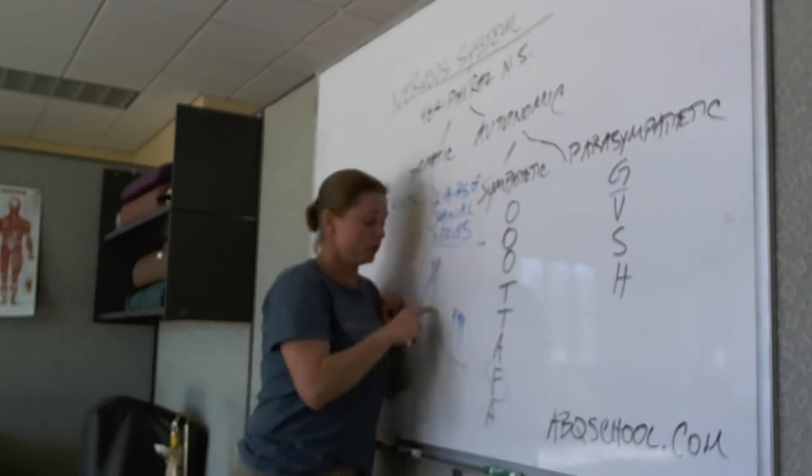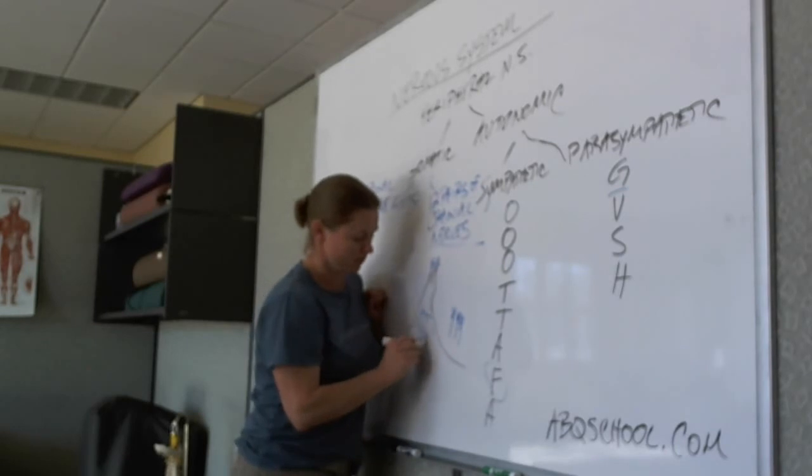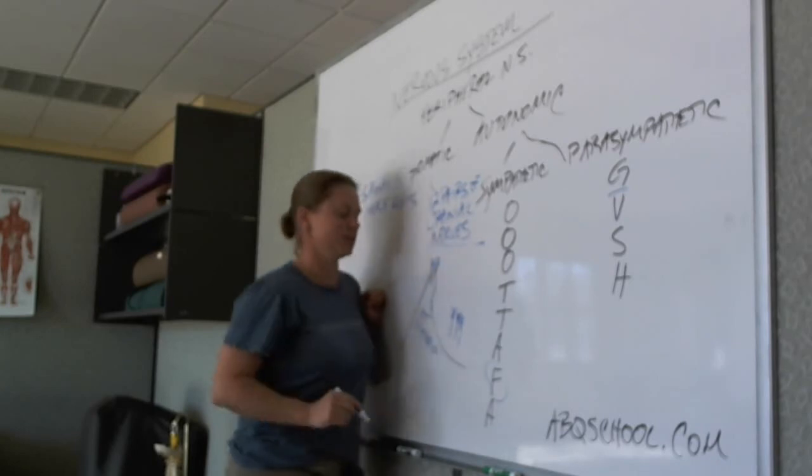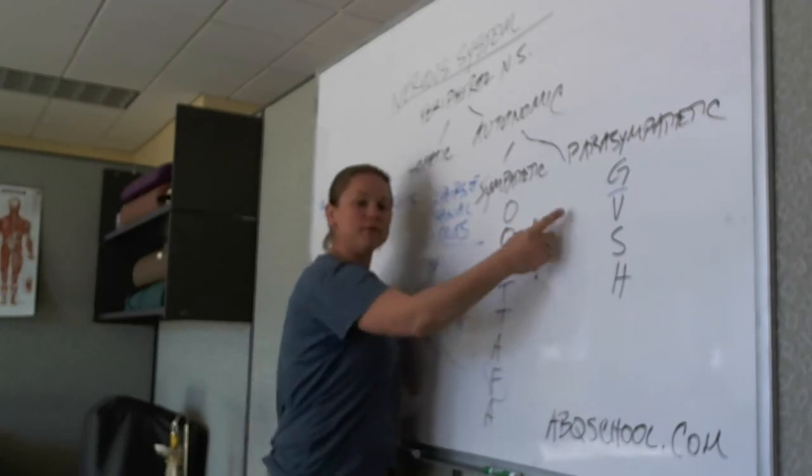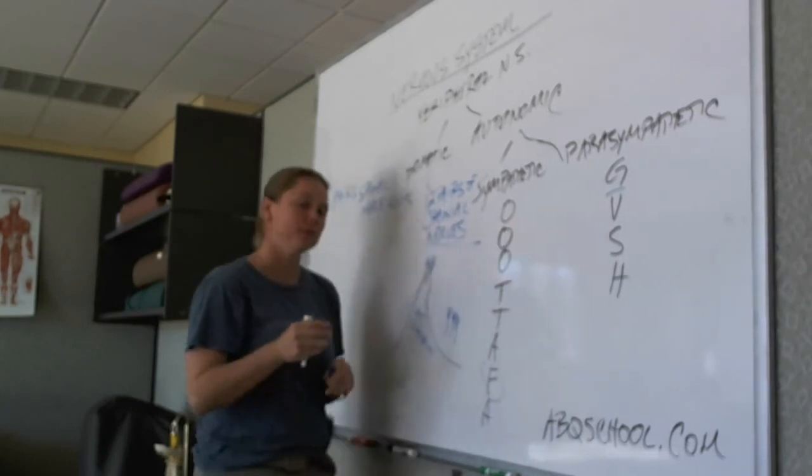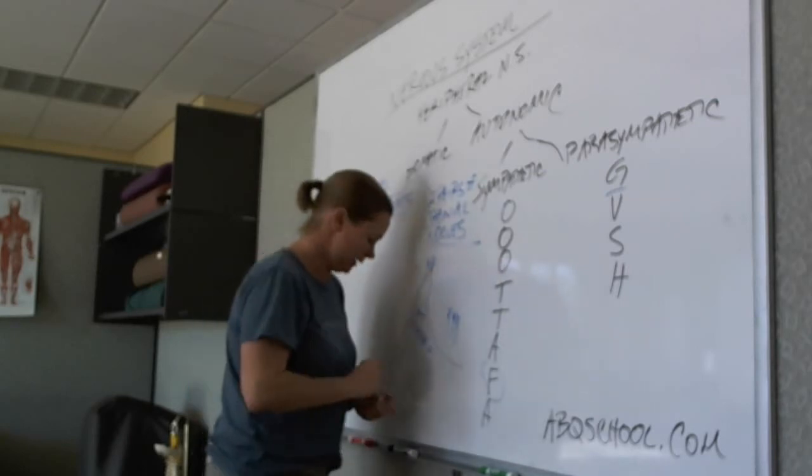So on old Olympus, because this is Mount Olympus, think mythology, where Zeus lived. On old Olympus's towering tops, a Finn and German, view some hops. Some modification you'll see here in a minute, but let's talk about the origin.